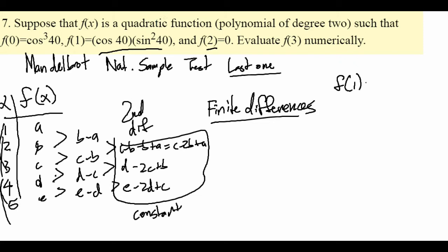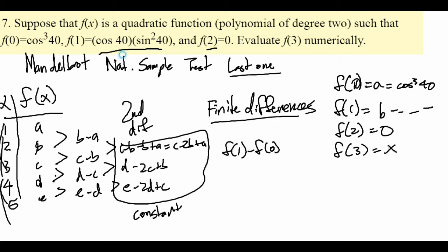So we can use this to solve for f of 3. So let's say f of 0 is equal to a, which is equal to cosine to the third of 40. f of 1 equals b equals cosine 40 sine squared 40. And f of 2 equals 0. Let's keep it at that. And f of 3 equals, let's just say x.